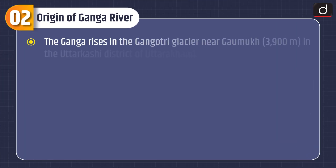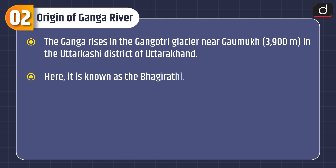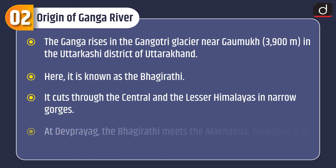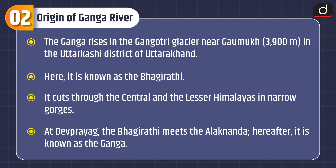The Ganga rises in the Gangotri glacier near Gaumukh, at 3,900 meters, in the Uttarkashi district of Uttarakhand. Here it is known as the Bhagirathi. It cuts through the central and lesser Himalayas in narrow gorges. At Dev Prayag, the Bhagirathi meets the Alaknanda, and hereafter it is known as the Ganga.